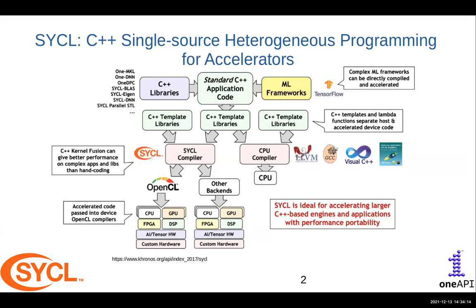SYCL is trademarked with Khronos. The goal of the SYCL programming model is to use C++ as a single source model for heterogeneous programming, so that one does not write code for accelerators separately and for the host separately. The goal is to have a single source code that works for both CPUs and any accelerators attached to it. There are several C++ libraries like oneMKL that you've heard in the morning, and several SYCL-based BLAS, DNN, and Paddle STL libraries.